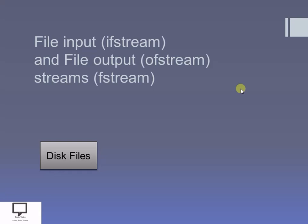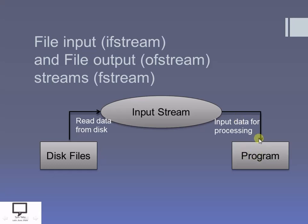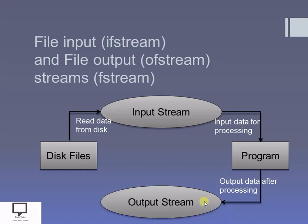Let's consider I have a file and I want to perform a read operation on it. I will read the data from the file with the help of ifstream, the input stream. After reading the data from the file, I will send this data for processing to the program. The processed data I then want to write back onto the file using the output stream, which is ofstream.